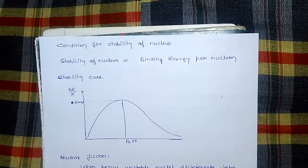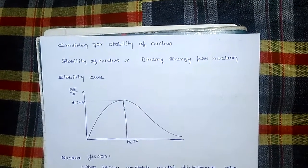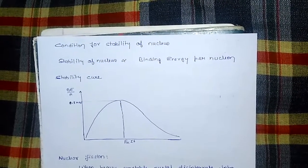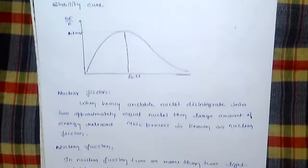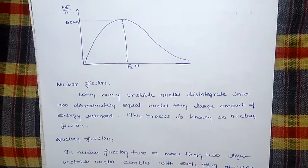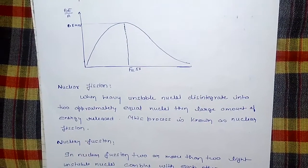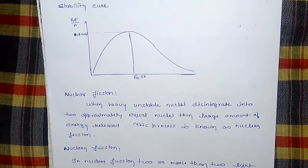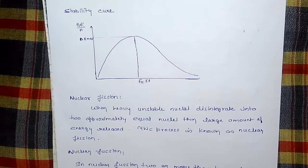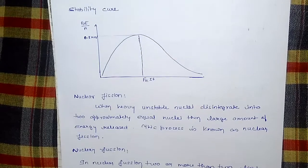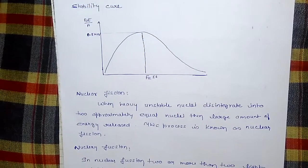Up to iron Fe56 nuclear fusion takes place and after Fe56 nuclear fission takes place. Nuclear fission: When heavy unstable nuclei disintegrate into approximately two equal nuclei, then large amount of energy is released. This process is called or known as nuclear fission.